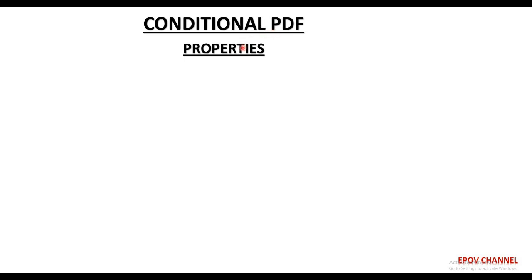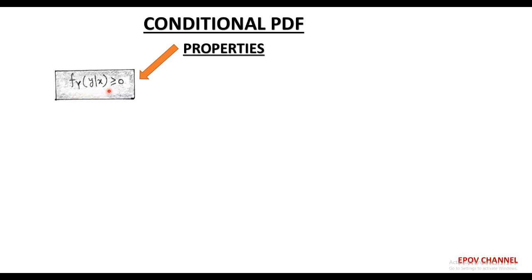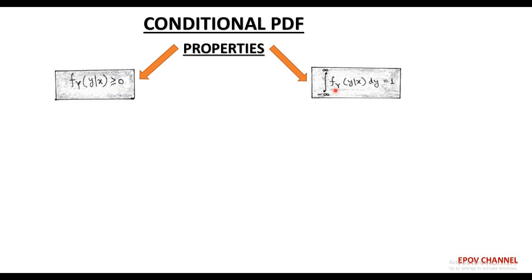The properties of the conditional PDF are as follows. The first property is that the conditional PDF f(y | x) is always greater than or equal to 0 — it is a non-negative function. The second property is that the area under the curve of the conditional PDF equals unity: the integration of f(y | x) dy equals 1.